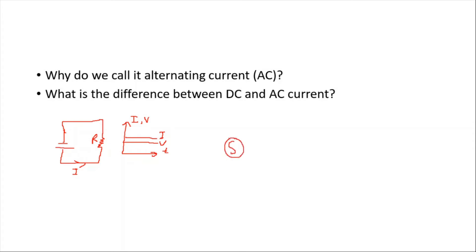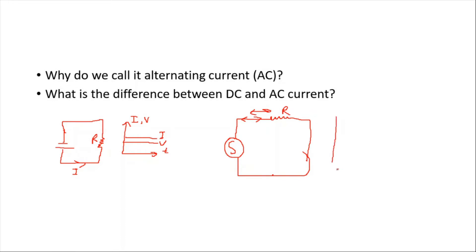On the other hand, in an alternating current circuit, if you connect a voltage source to a resistor or any other AC circuit element, the current will once flow in one direction and then move in the opposite direction. The current oscillates — it changes direction with time. So the change of current or voltage with time is going to be a sine function. This is the basic difference between DC and AC.